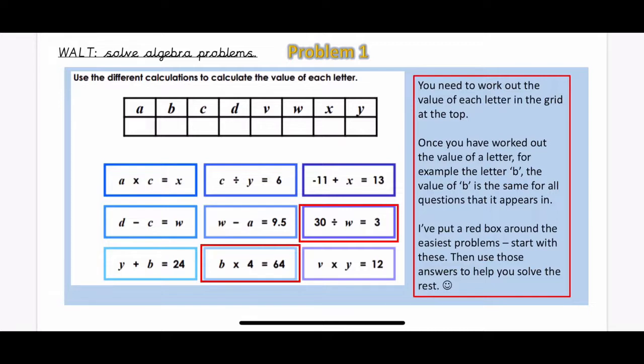Okay, so if we look at the next one in the red box then, it says B times 4 equals 64. So you know that something multiplied by 4 equals 64, so we need to do the inverse. Think about what the inverse of multiplication is, so the opposite, and then do that to work out what B is.